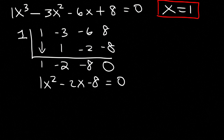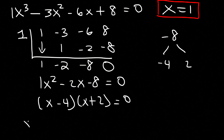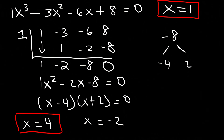Let's set that equal to 0 and see if we can factor this expression. Two numbers that multiply to negative 8 but add to the middle coefficient of negative 2 are negative 4 and positive 2. So factored it's going to be x minus 4 times x plus 2. So x is equal to 4 and negative 2. Combined with x equals 1, we have three real solutions: 4, negative 2, and 1.